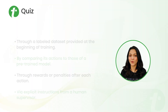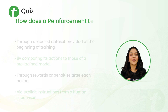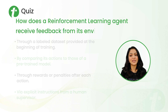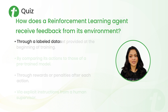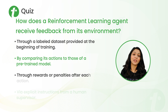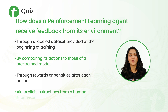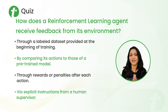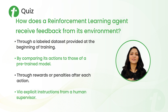Here is a quiz for you all. The question is: how does a reinforcement learning agent receive feedback from its environment? The options are: through a labeled dataset provided at the beginning of training; by comparing its actions to those of a pre-trained model; through rewards or penalties after each action; or via explicit instructions from a human supervisor. I hope you all know the answer as we just discussed it — write your answers in the comment section.